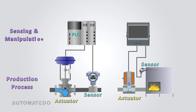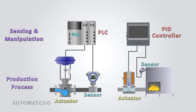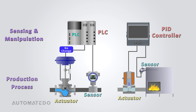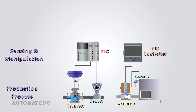Reaching the next level of the automation pyramid — sensing and manipulation — you encounter the indispensable contributions of PLCs and PID controllers. Their primary function includes collecting input data from measuring instruments installed at the field level, processing this data using built-in programming to analyze system conditions, and generating control signals to guide manufacturing machinery, ensuring efficiency and accuracy to the desired set points.